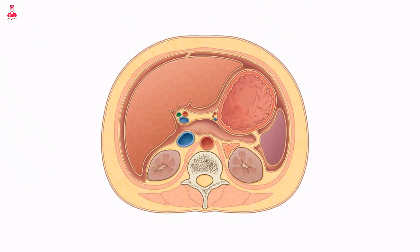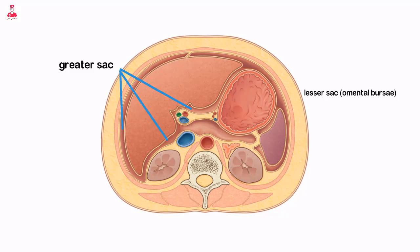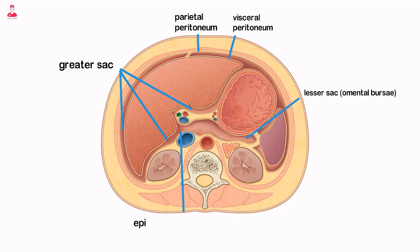The peritoneal cavity includes the greater sac and lesser sac, or omental bursa. The greater sac is located between the inner surface of the anterior abdominal wall and the outer surface of the abdominal viscera. It is bounded by the parietal and visceral peritoneum, and it communicates with the lesser sac through the epiploic foramen of Winslow. The lesser sac is located primarily between the posterior surface of the stomach and the posterior abdominal wall.